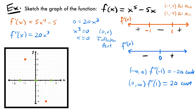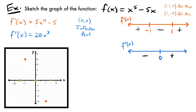The inflection point at (0, 0) doesn't give us a new point to plot since we already have (0, 0) as both an x-intercept and y-intercept. But do keep in mind that at the origin our function changes its concavity. Now we're ready to sketch the graph. We have all the information we need for an accurate drawing. What I'm going to do now is draw a number line that combines both of our previous number lines so we can see the first and second derivative signs side by side for each interval.